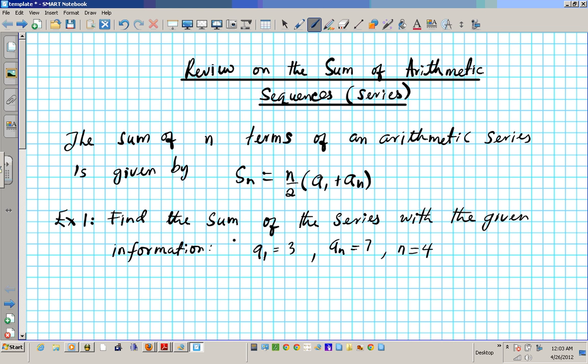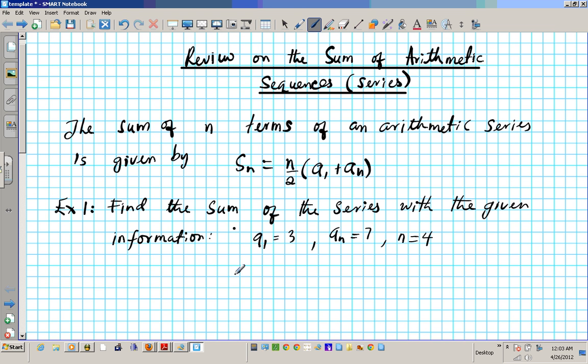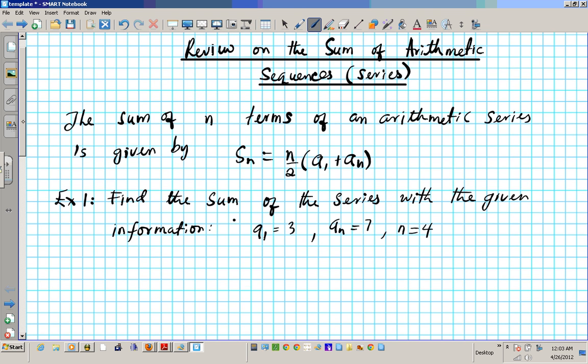So we are going to compute the sum of the arithmetic series using this information. Basically what we know: we know the formula, we know what a1, aN, and n is, so we are just going to plug it in directly. S sub 4 basically means the sum of the first four terms, since n is 4, is given by 4 over 2 times 3 plus 7.